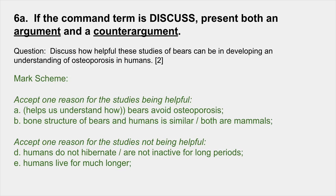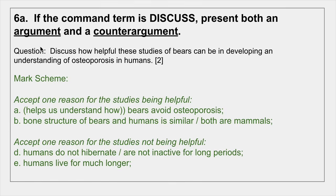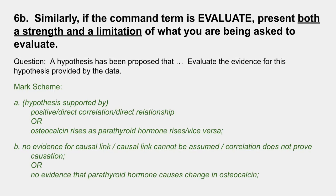Number 6 — I've split it into two parts because there are two command terms with important rules. First: 'discuss' means you need to present an argument and a counter-argument. For example, 'discuss how helpful studies of bears can be in developing an understanding of osteoporosis in humans' — you need one reason the studies are helpful, and also a counter-argument: however, humans don't hibernate, so they're not inactive for long periods like bears are.